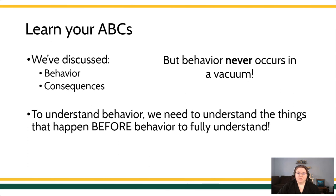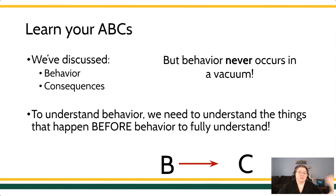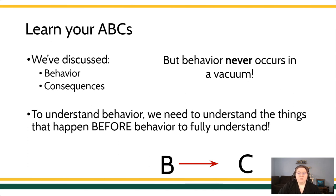We have to understand a bit more about the context in which their behavior is occurring to help them out. Behavior is followed by consequences, and those consequences influence the future rate of the behavior. Reinforcement results in more behavior; punishment or extinction will result in less behavior. But we want to add in this third layer of understanding now, so we're going to switch to talk about antecedents.